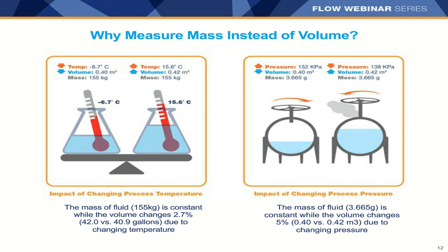Why measure mass instead of volume? An increase in temperature causes density to go down, which results in increased volume — the higher the temperature of the fluid or gas, the greater the volume it will occupy. However, the units of mass stay the same when temperature changes, because mass does not change with temperature. So if you're measuring in volume and temperature increases, volume goes up; measuring in mass, it stays the same.